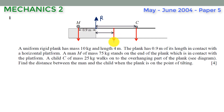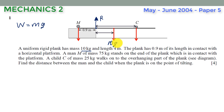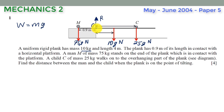The weight of the plank is obtained by multiplying its mass in kilograms by the gravitational field strength g. So the weight of the plank is 10g newtons, the weight of the man is 75g newtons, and the weight of the child is 25g newtons. We take the edge of the platform as the turning point and call it point O.